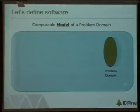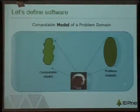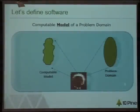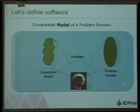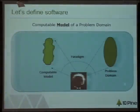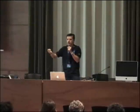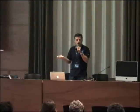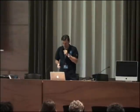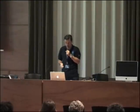What is software? Software for me is a model that you create by understanding the problem domain through a paradigm — in this case, the object-oriented paradigm — and you express it in a computable model. So software is a computable model of a domain problem.